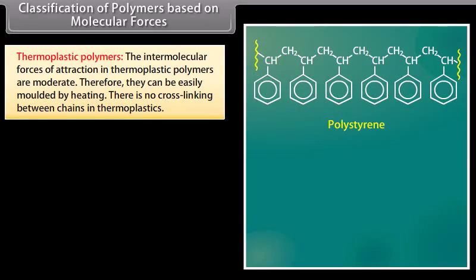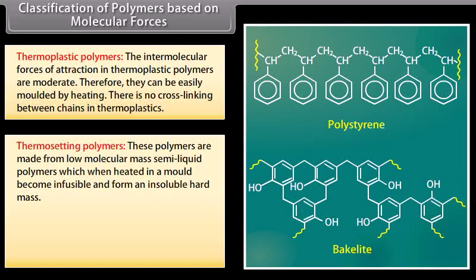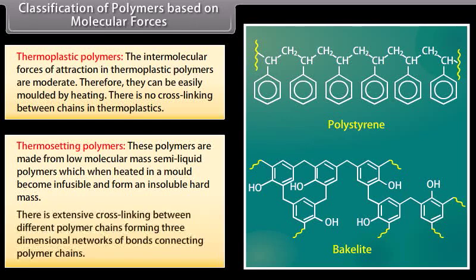Thermoplastic polymers have moderate intermolecular forces, so they can be easily molded by heating, with no crosslinking between chains — for example, polyethylene and polystyrene. Thermosetting polymers are made from low molecular mass semi-liquid polymers which, when heated in a mold, become infusible and form an insoluble hard mass with extensive crosslinking forming three-dimensional networks — for example, bakelite.